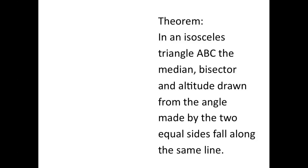In today's lesson, we're going to cover a theorem regarding an isosceles triangle. This theorem states that in an isosceles triangle ABC, the median, bisector, and altitude drawn from the angle made by the two equal sides all fall along the same line. To understand this theorem, we need to understand three terms: median, bisector, and altitude.